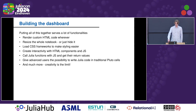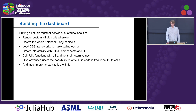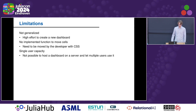Assembling all of this allows us to render custom HTML code wherever we want — either as output of a cell or moved below the body with JavaScript. We can resize the whole notebook or hide it so it won't look like a Pluto notebook anymore. We can load custom CSS frameworks, create interactivity with HTML components like buttons, text boxes, or drop-downs, call Julia functions from JavaScript, and embed Pluto cells in our HTML. Only creativity is the limit.